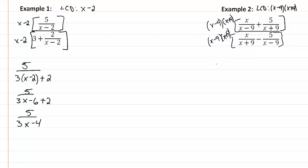That's going to leave us with x times x plus 9 plus 5 times x minus 9, all over x times x minus 9 minus 5 times x plus 9.